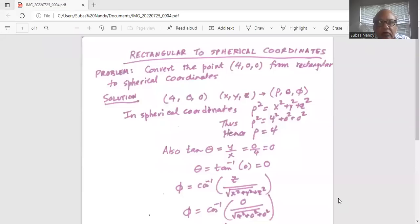Convert the point from rectangular to spherical coordinates. So x is 4, y is 0, z is 0. And we have to convert it to rho, theta and phi.